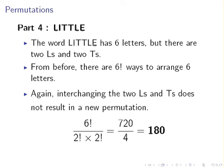There are six factorial ways to arrange six letters. But, again, what we do is divide by two factorial times two factorial. This is to account for the two L's, and this is to account for the two T's. So, it's 720 divided by four, and the answer there is 180.